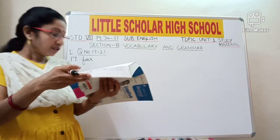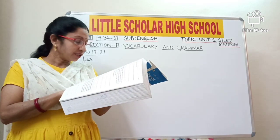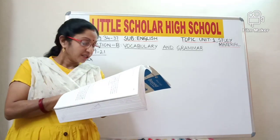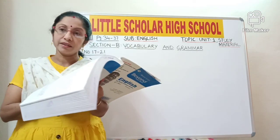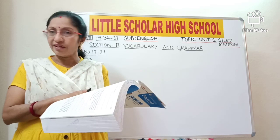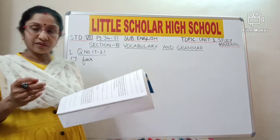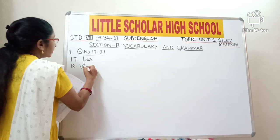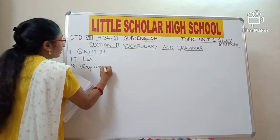Question number 18: 'Gopi's sister said to him exasperatedly.' What does the word 'exasperatedly' mean? It means very annoyed, very angry or irritated. The meaning of 'exasperatedly' is 'very annoyed'.